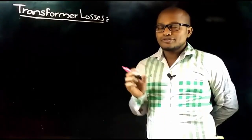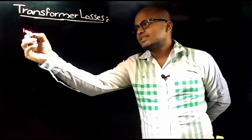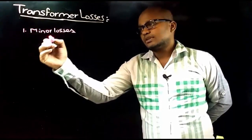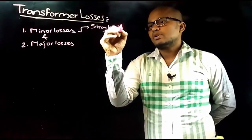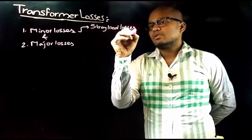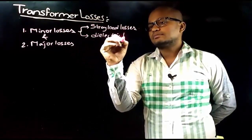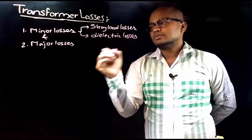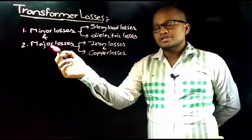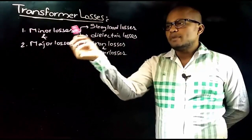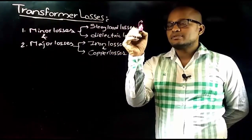Let's discuss the power losses in a transformer. Transformer power losses are classified as minor losses and major losses. The minor losses include stray load losses and dielectric losses, while iron losses and copper losses come under major power losses.